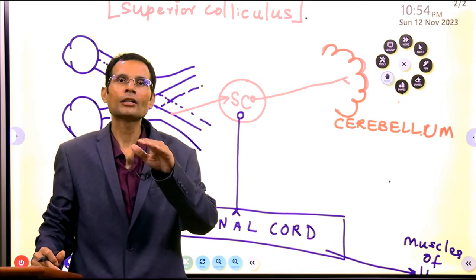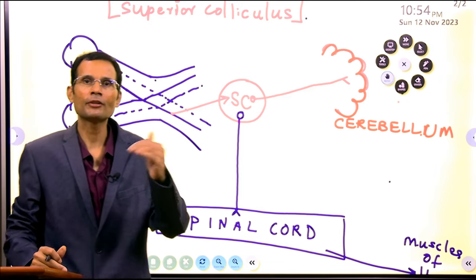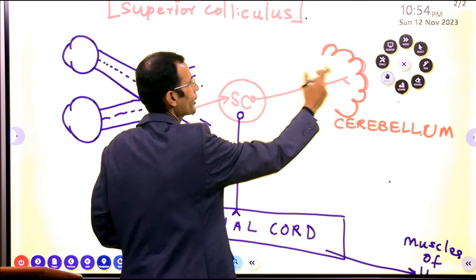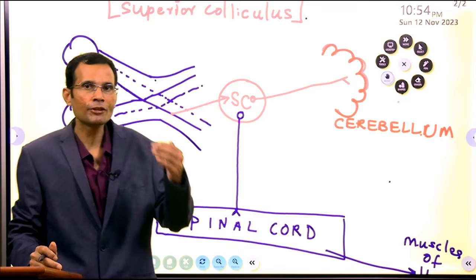Tectum, as I mentioned, roof of the midbrain where there is superior inferior colliculus. So tectocerebellar tract. So cerebellum has received the visual input.